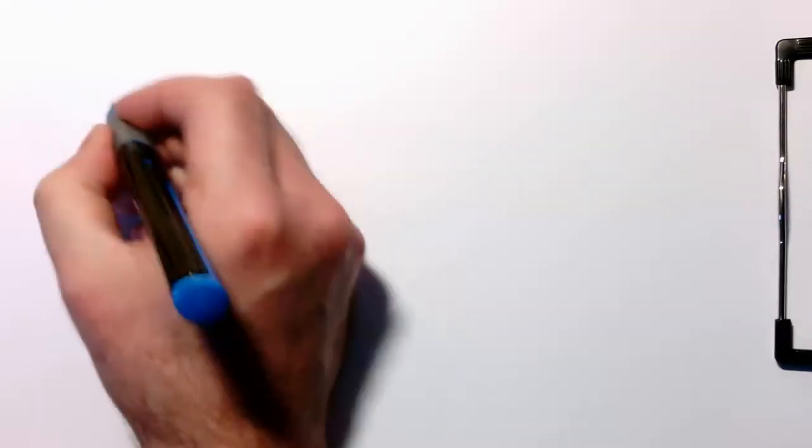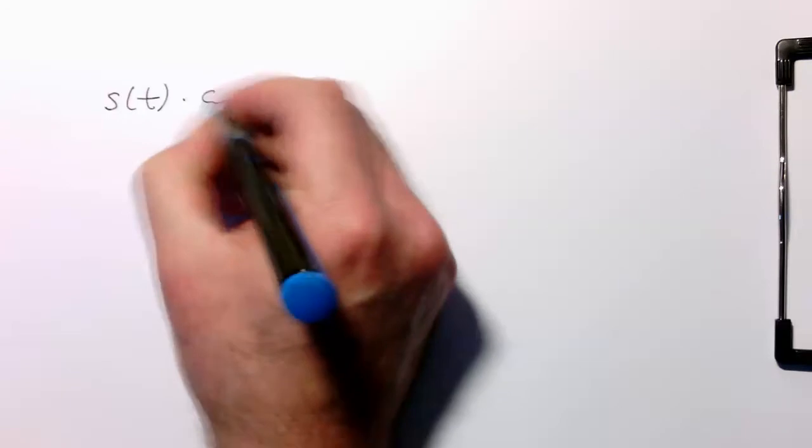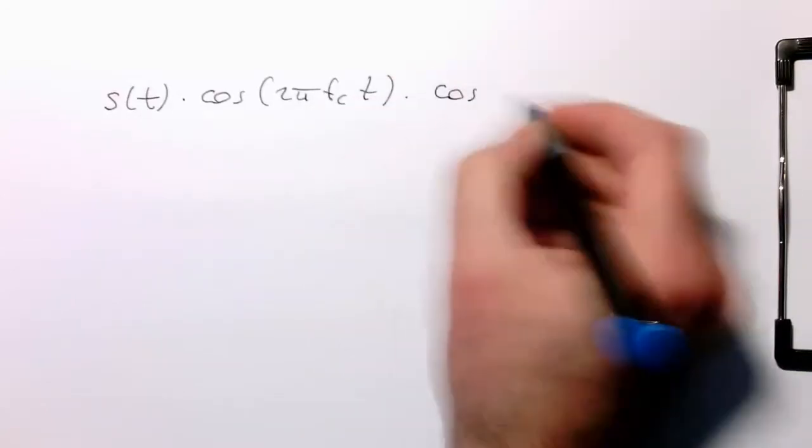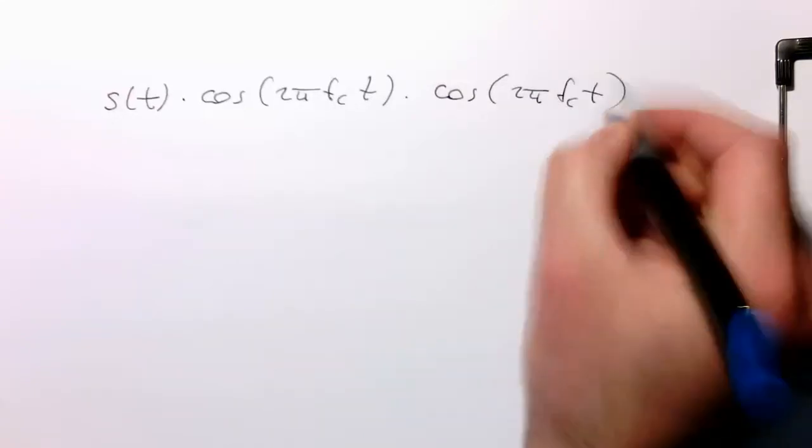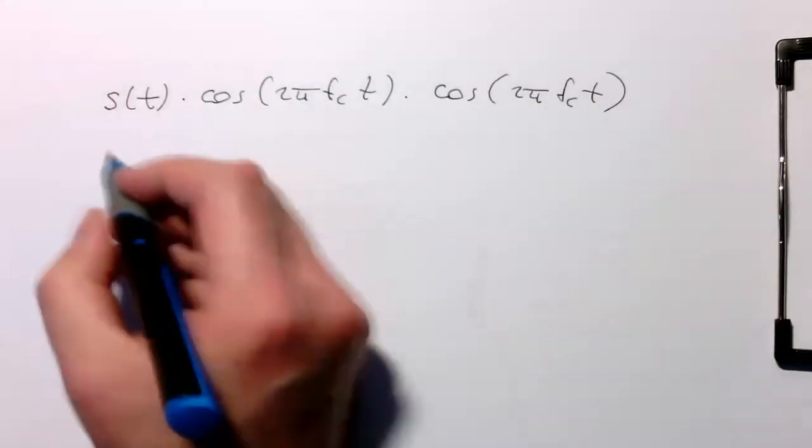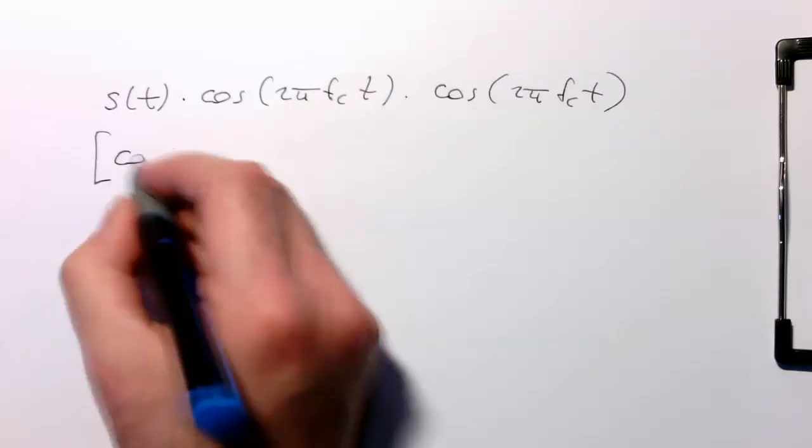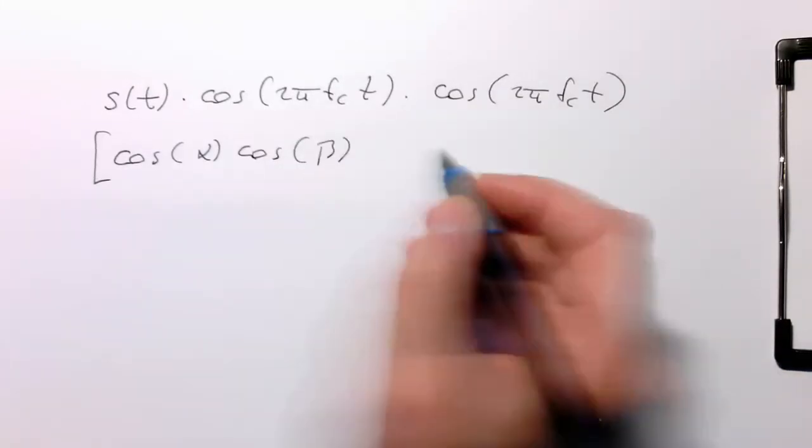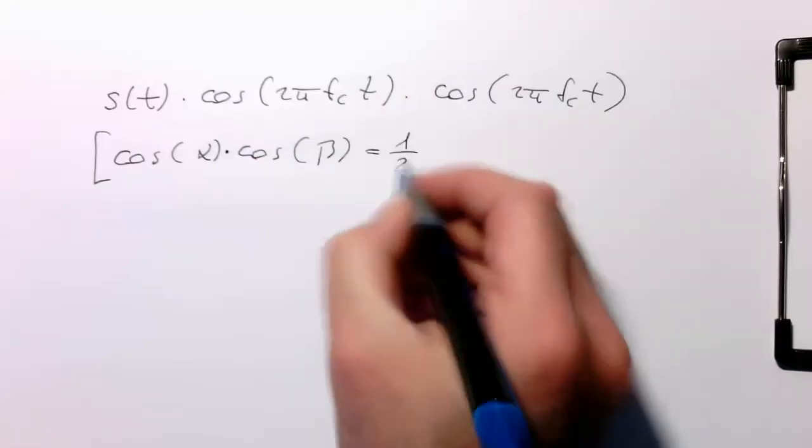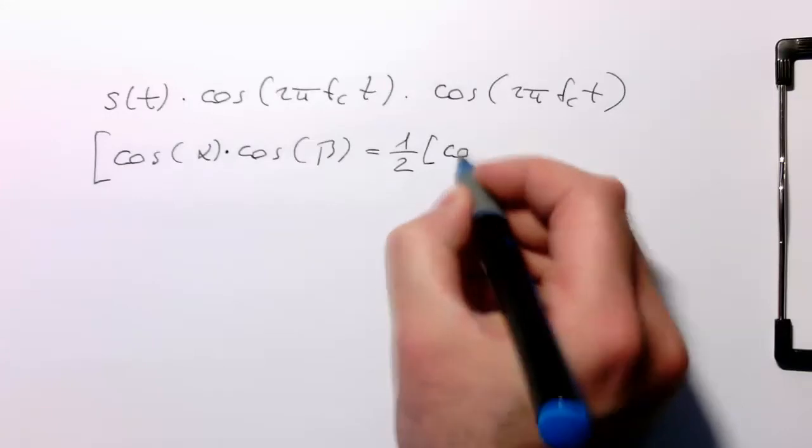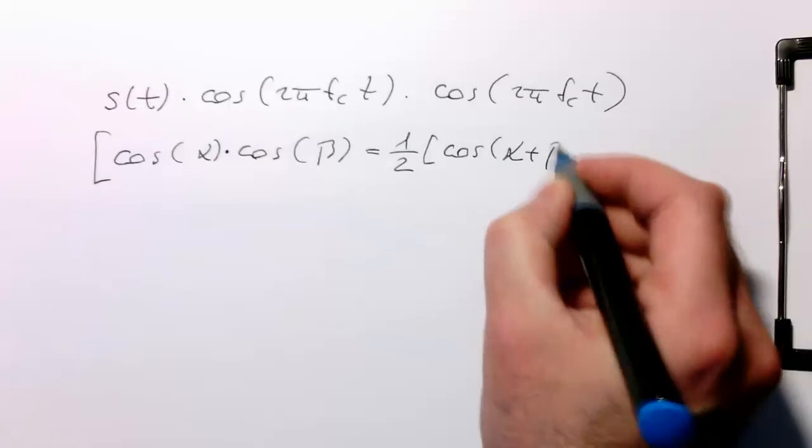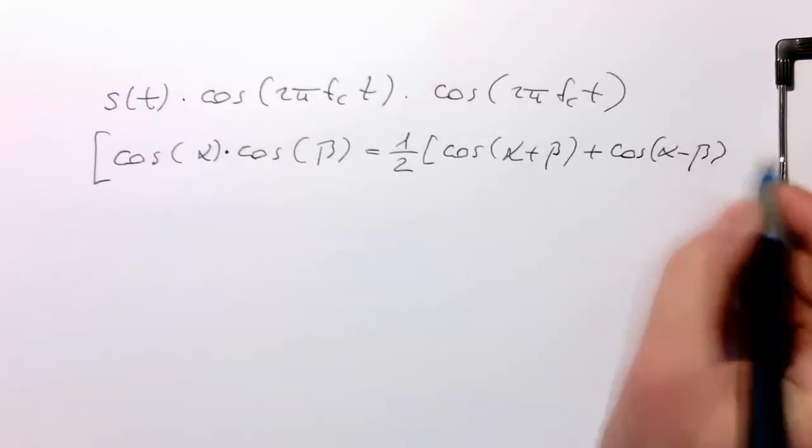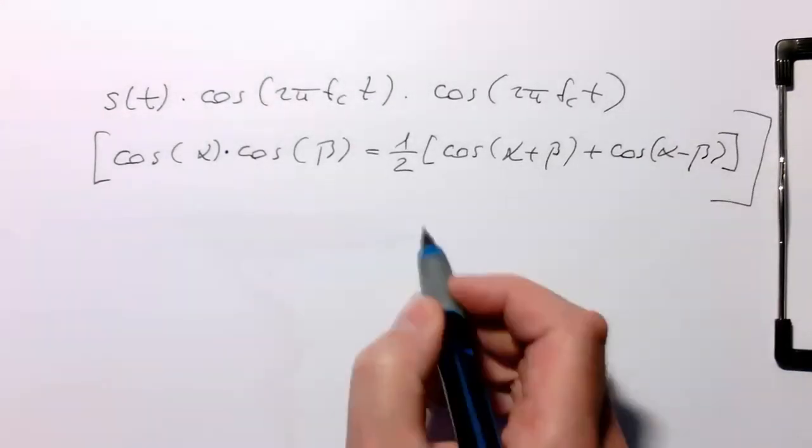In our receiver, we have s(t) multiplied by cosine 2π fc t, multiplied by cosine 2π fc t. We could square that, but we can also remember this equation from high school: cosine(α) · cosine(β) = ½[cos(α+β) + cos(α-β)]. This is quite a handy equation.